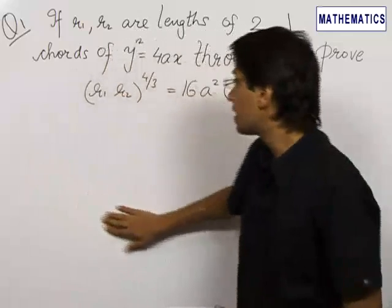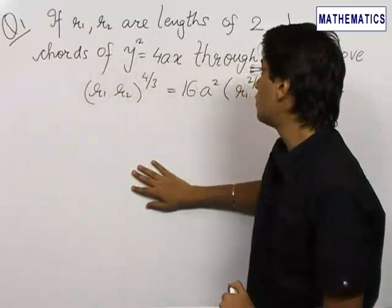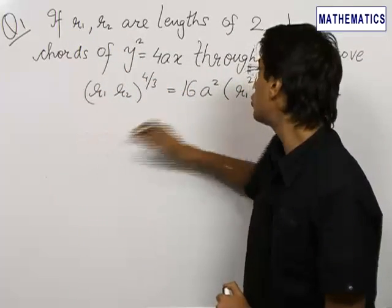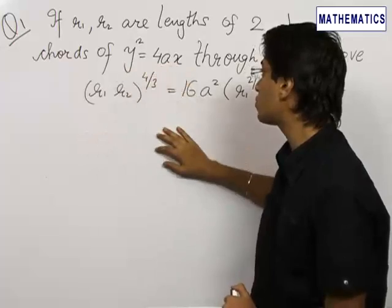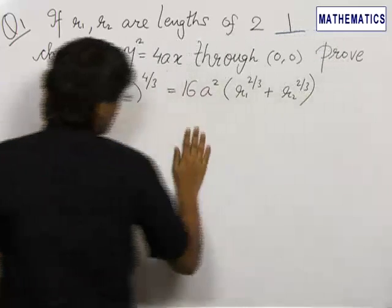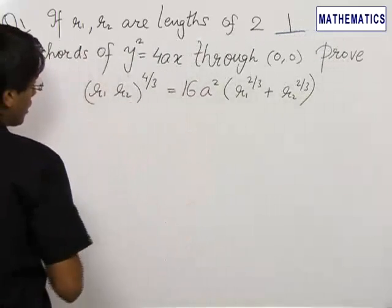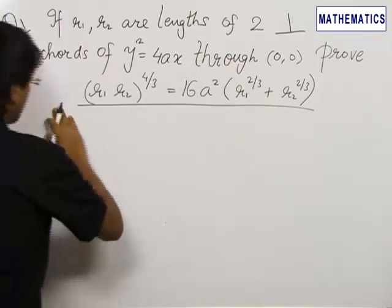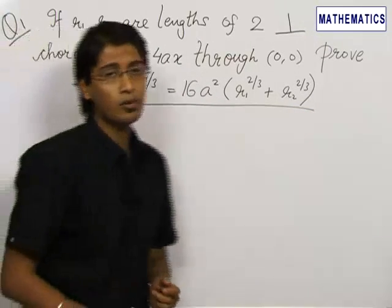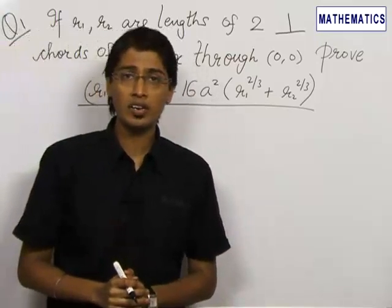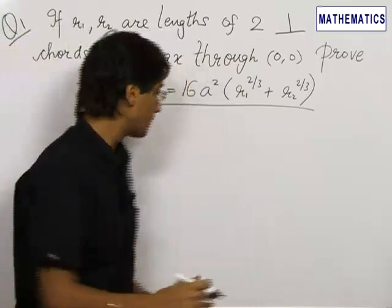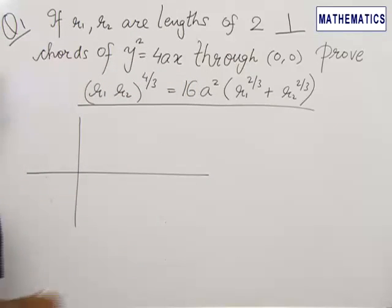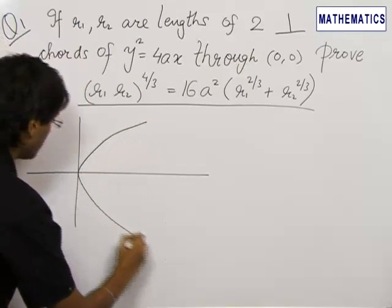Getting started with the first question: we are given that if R1 and R2 are the lengths of two mutually perpendicular chords through the origin for the parabola y² = 4ax, then we need to prove the relation for R1 and R2. For all these types of questions in parabola, or in coordinate geometry, it is very easy if we start by making a figure for the problem.